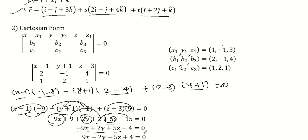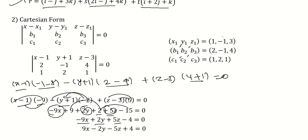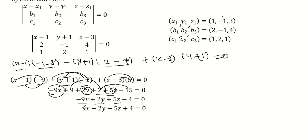Simplifying the equation, plus will be minus and plus will be minus. So 9x minus 2y minus 5z plus 4 equals 0. This is the required Cartesian equation.